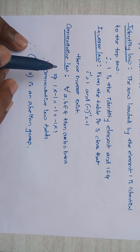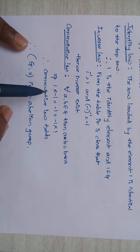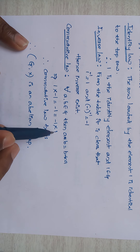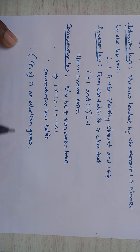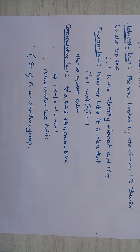Commutative law: for all a, b ∈ G, a·b = b·a. That implies 1·(−1) = −1 and (−1)·1 = −1, so commutative law holds. Therefore G is an abelian group. Hence the square roots of unity form an abelian group with respect to multiplication. If you have any doubts, you can send questions to my WhatsApp number. Thank you.